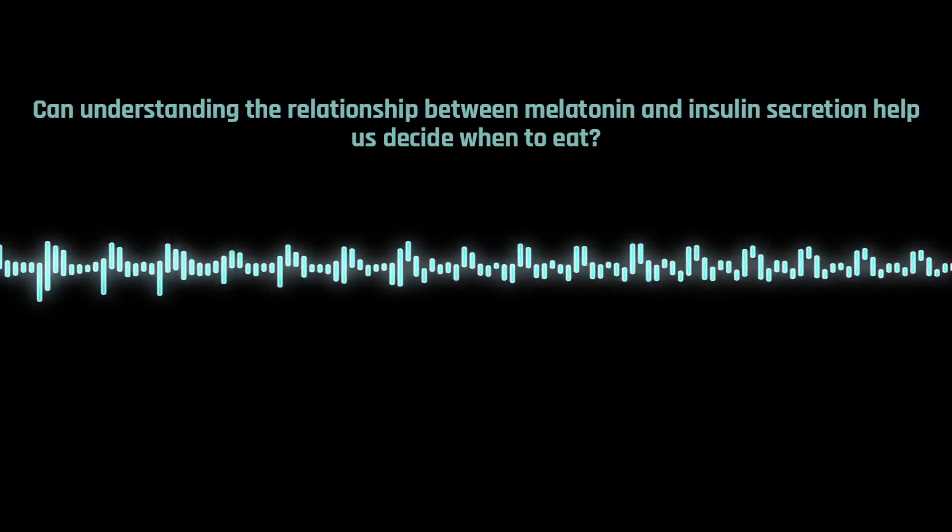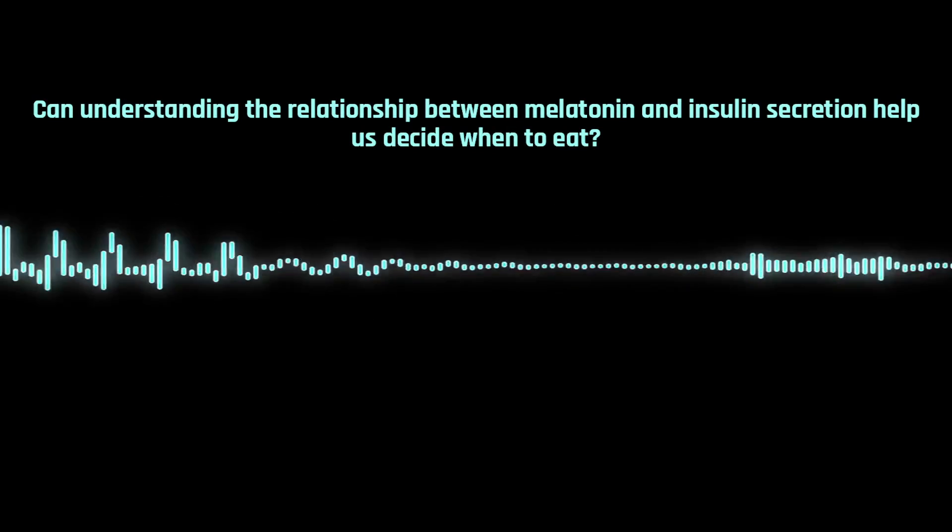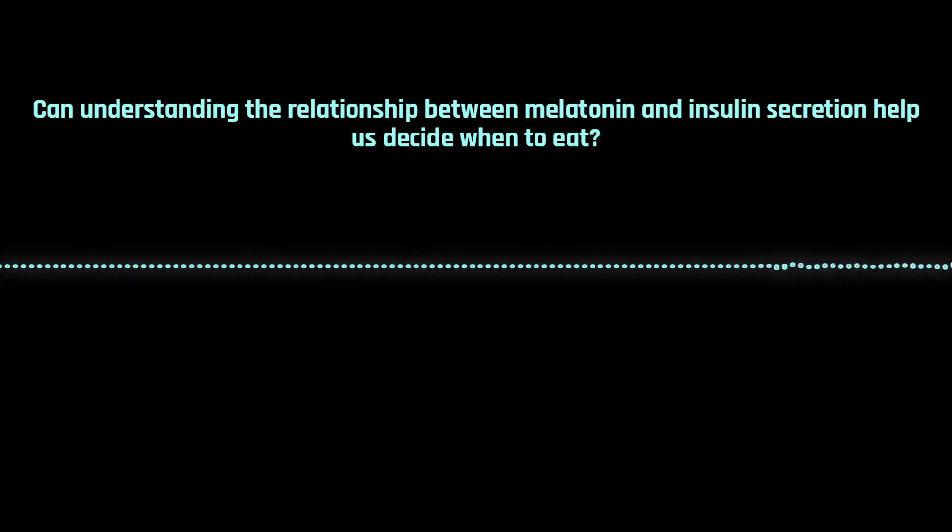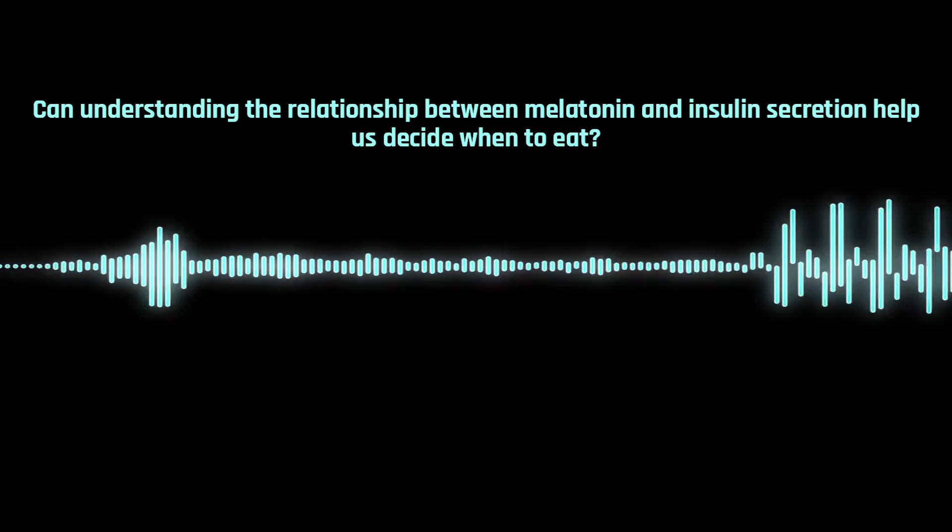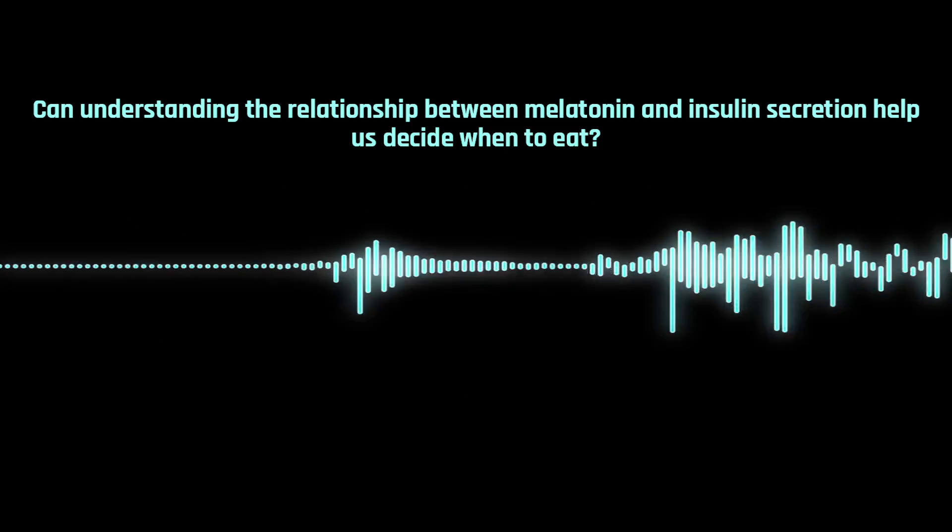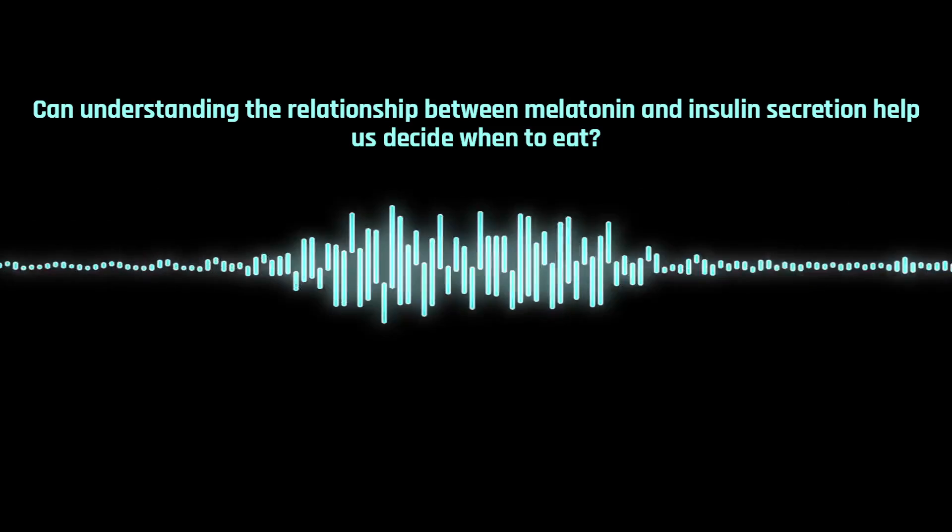It's interesting about what you just said about them, possibly the melatonin levels being elevated even two to three hours after waking up. You have previously said in another podcast, you've talked about how melatonin actually can inhibit the secretion of insulin from the beta cells in the pancreas, the islet cells in the pancreas. And that would obviously affect your glucose, blood glucose levels.